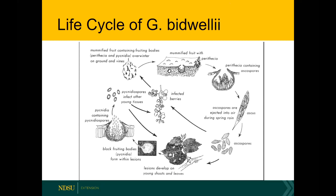We can't prevent that cycle if we don't get rid of those mummified fruit. Even if you removed all sources of primary inoculum, there's still a chance that conidia could blow in from a neighboring vineyard or grapevine. However, that infection would take place later in the season and your plants would be more robust and better able to handle that later introduction of the pathogen, as opposed to if you have a large number of mummies in your own growing conditions.